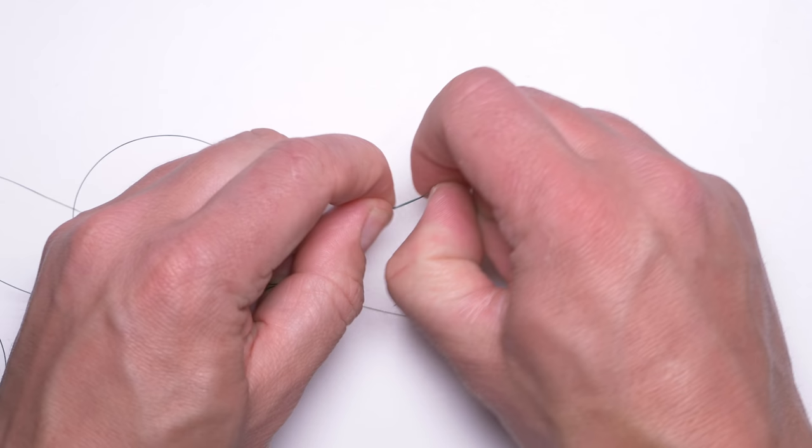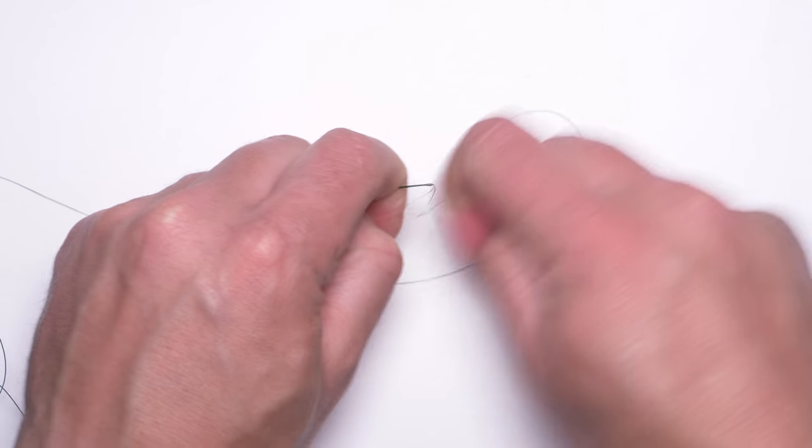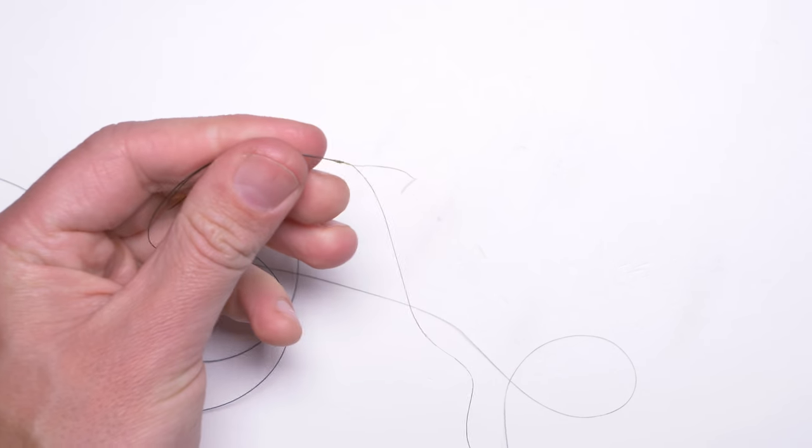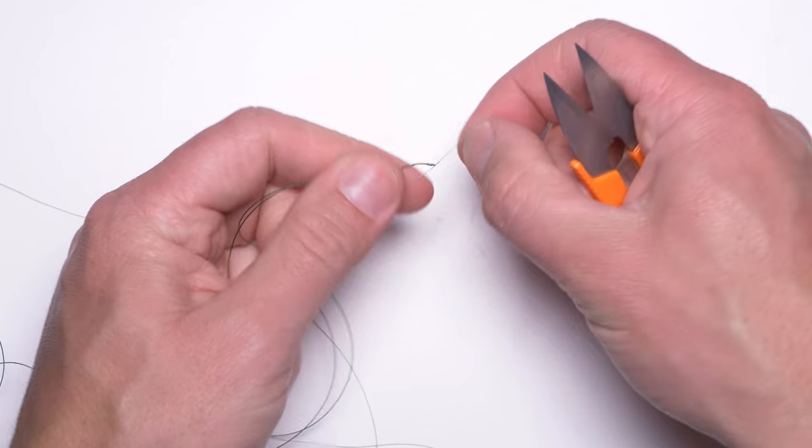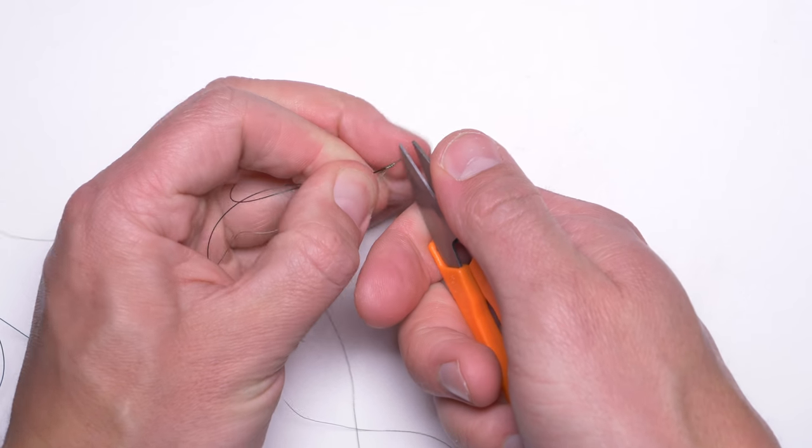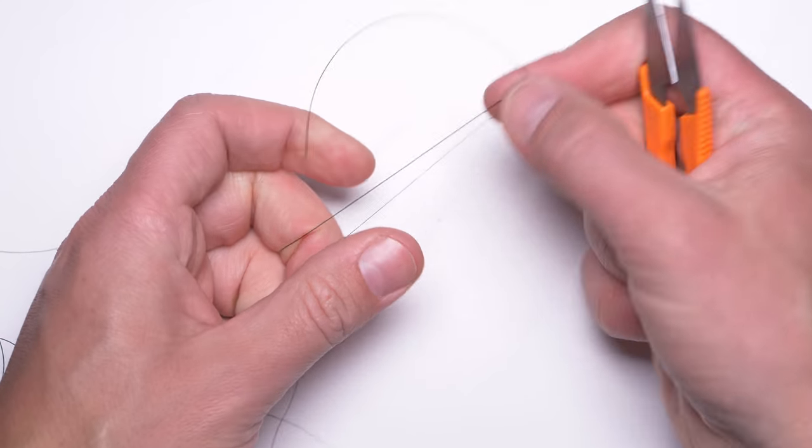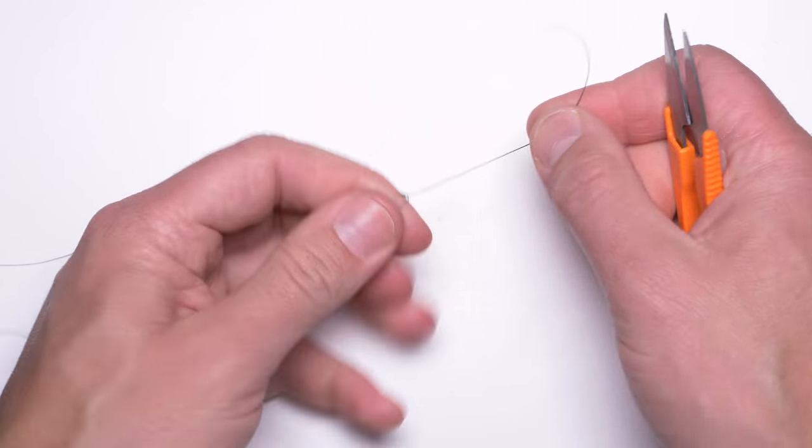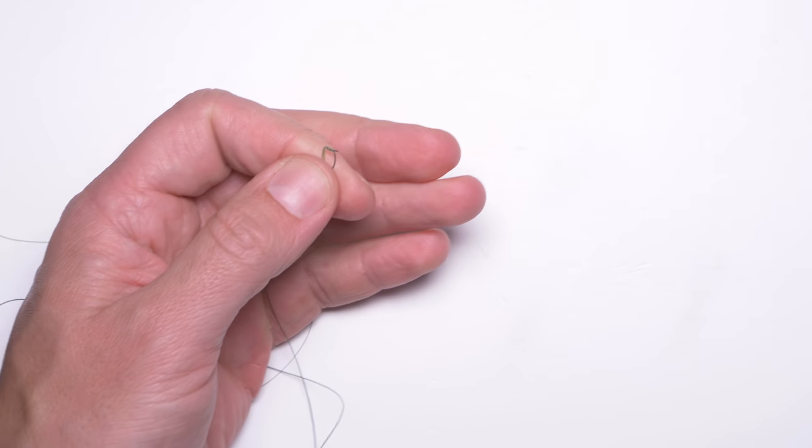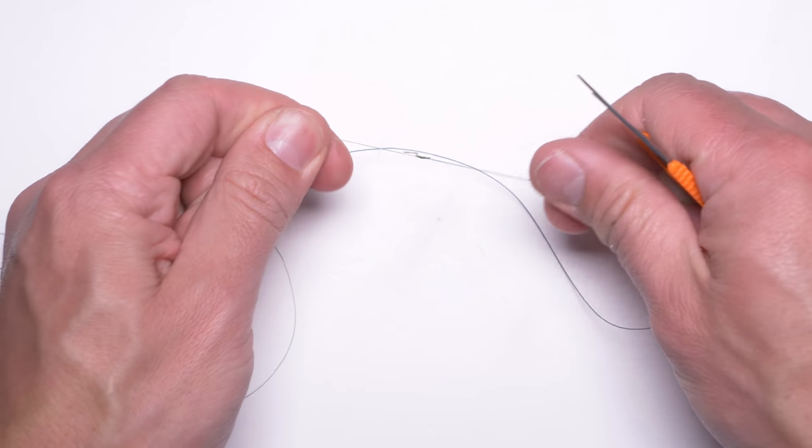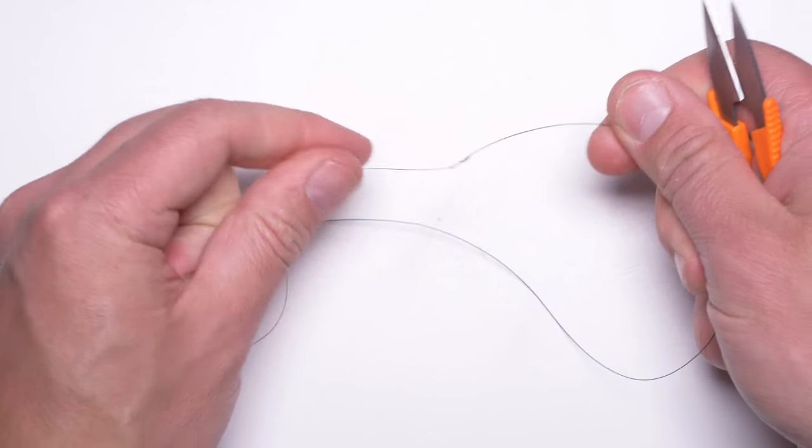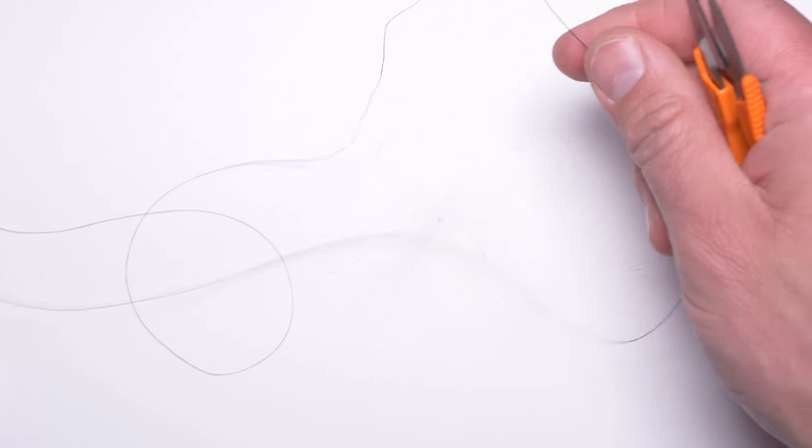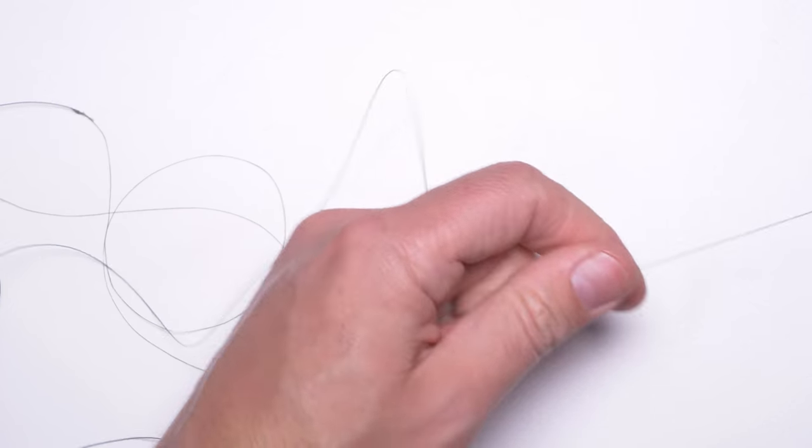As always when tying your own knots, don't forget to wet them. Right, we have our main line attached to our shock leader. I will use a shorter shock leader, like a meter or so.